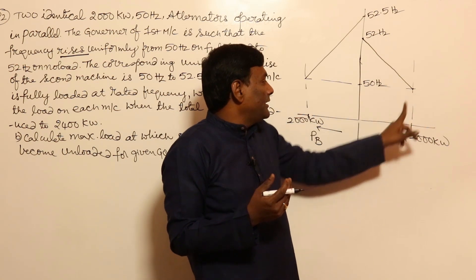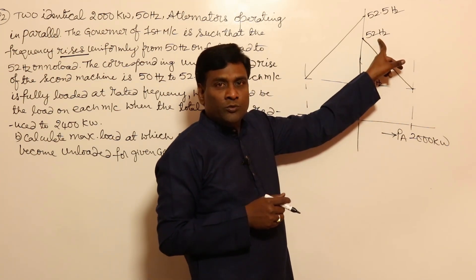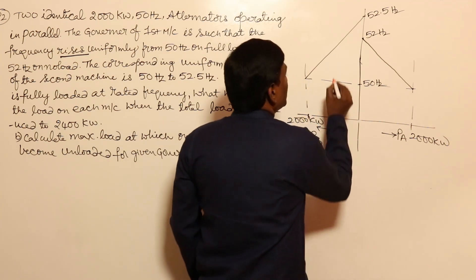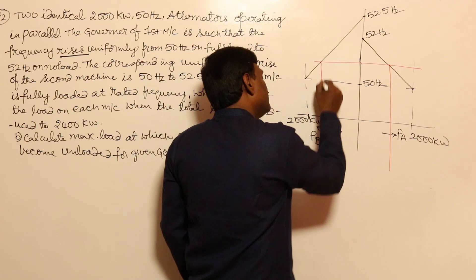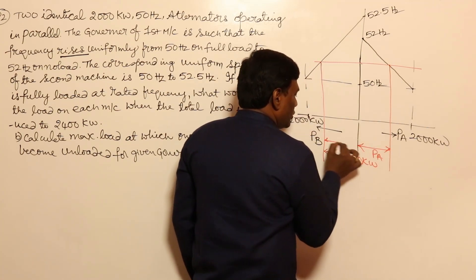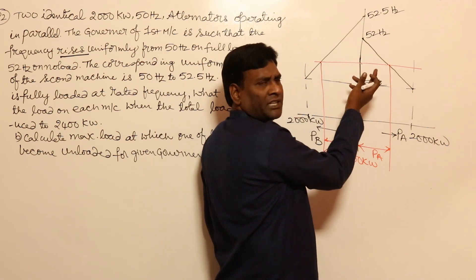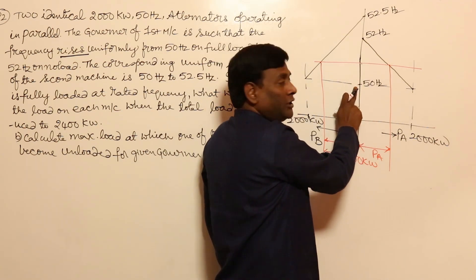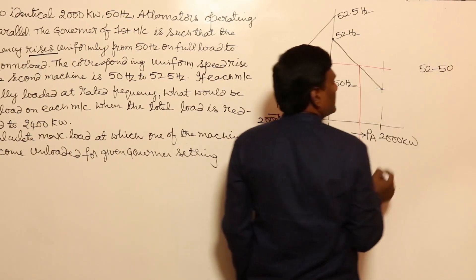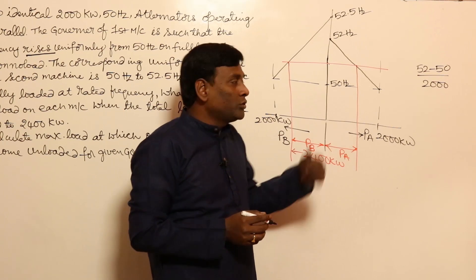Both machines are operating at full load at 50 Hz. If you keep reducing the output power, speed or frequency rises due to speed regulation — frequency rises to 52 in one case and to 52.5 in the other. The total output is now 2400 kilowatt, which equals Pa plus Pb. We need to write two equations to solve this.